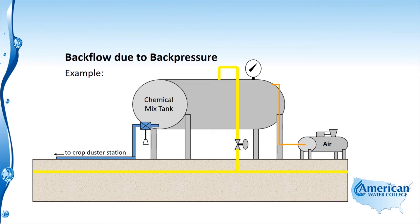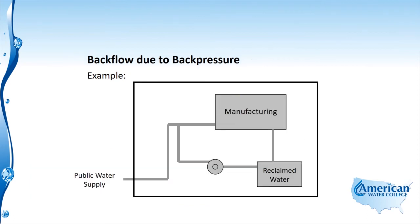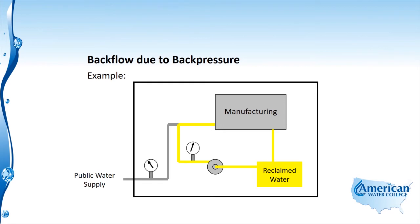An air gap in this situation would solve this problem and prevent backflow. Another example of backflow due to back pressure is in a manufacturing plant where they reclaim their water. During the manufacturing process, their water gets reclaimed and pumped back to the process, reusing their water in the system. This works out well as long as the pressure of the public water supply is greater than the pressure of the reclaimed water system. If the public water system pressure drops, you'll have backflow due to back pressure in that circumstance.